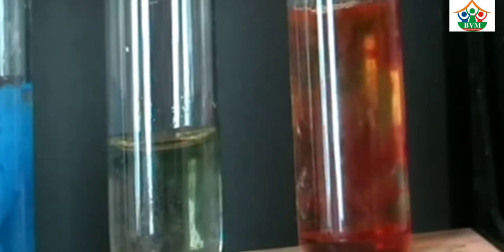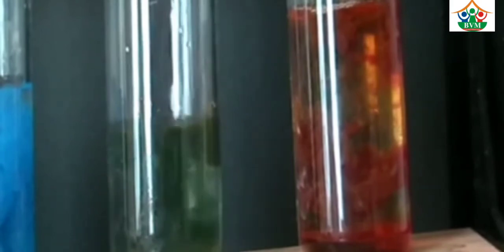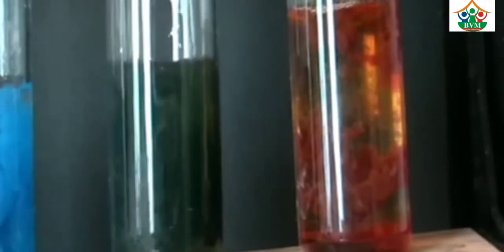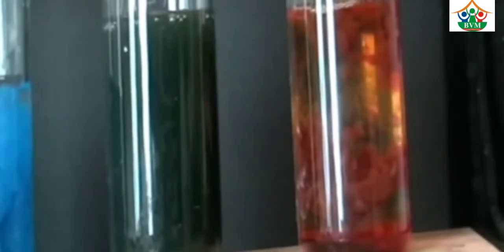When you add sodium hydroxide to Fe³⁺ solution, a reddish-brown precipitate forms. After adding excess sodium hydroxide to Fe²⁺ and Fe³⁺, no reaction occurs and the precipitates remain the same.